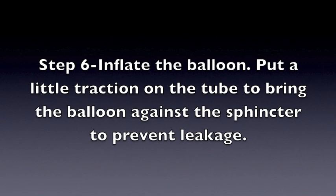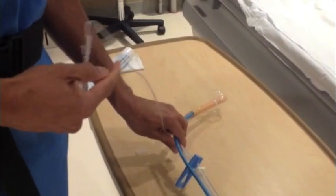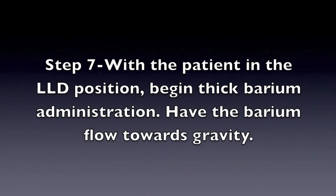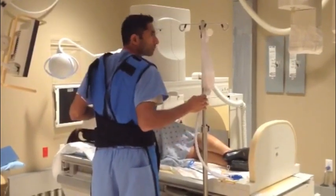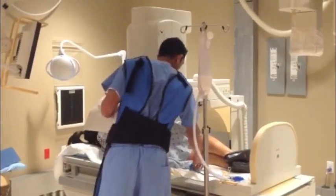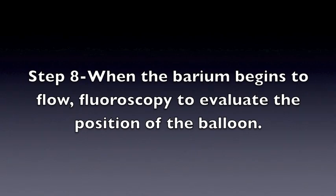Step 6: Inflate the balloon. Put a little traction on the tube to bring the balloon against the sphincter to prevent leakage. Step 7: With the patient in the left lateral decubitus position, begin thick barium administration. Have the barium flow towards gravity. Step 8: When the barium begins to flow, use fluoroscopy to evaluate the position of the balloon.